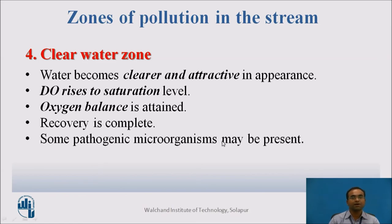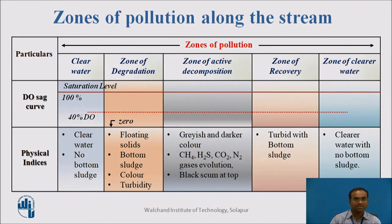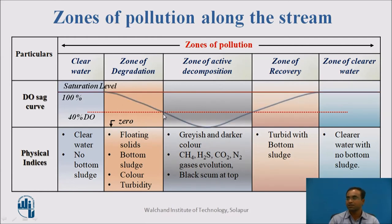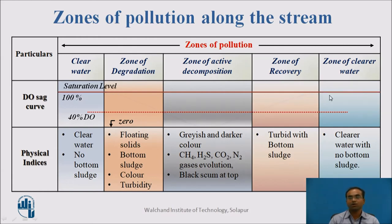To summarize, a table is provided with properties of each zone. Focusing on DO levels: in the Zone of Degradation DO decreases to 40% of saturation; in Zone of Active Decomposition it reaches zero and stays there until it rises back to 40%; in the Zone of Recovery DO increases back up to saturation level; and in the Zone of Clearer Water DO is again at saturation level.